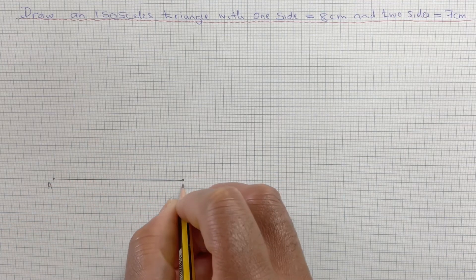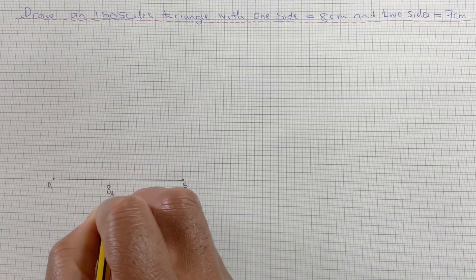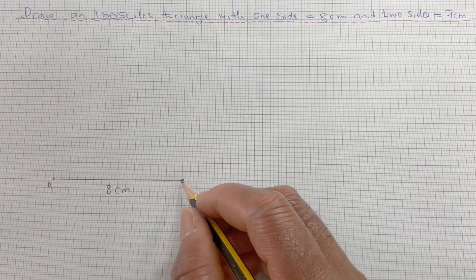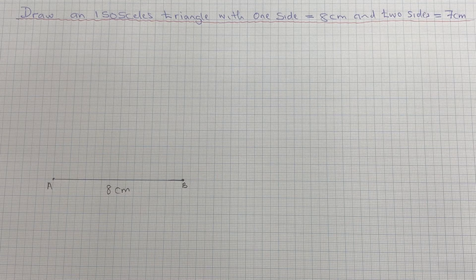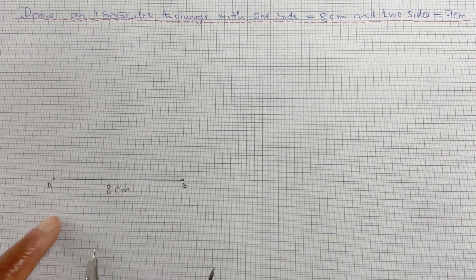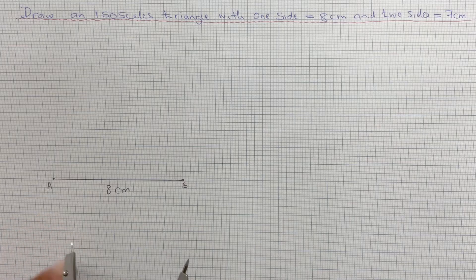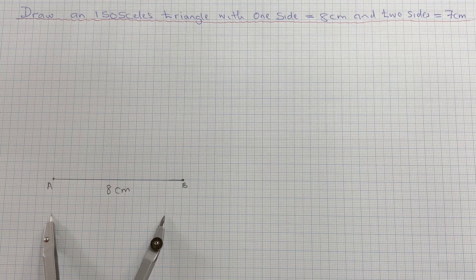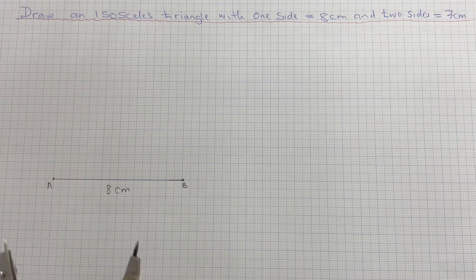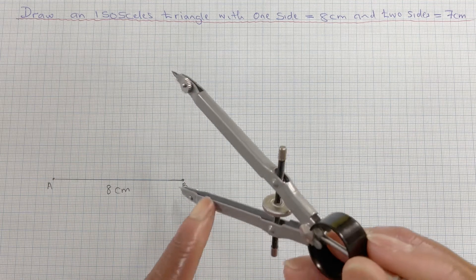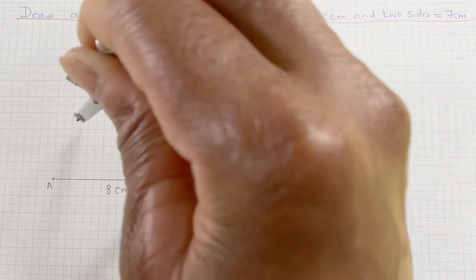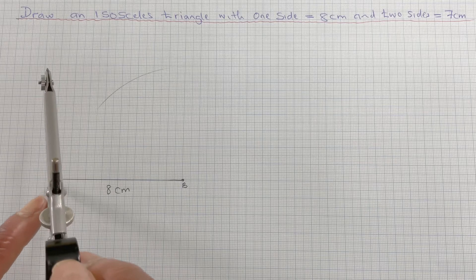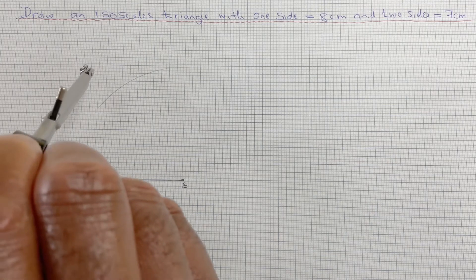8 cm. So the next thing is to measure 7 cm with the compass. So really each big square box is 1 cm, so I could measure 7 cm by doing that. So that's roughly 7 cm and I need to come to point A. And at point A, I draw an arc.